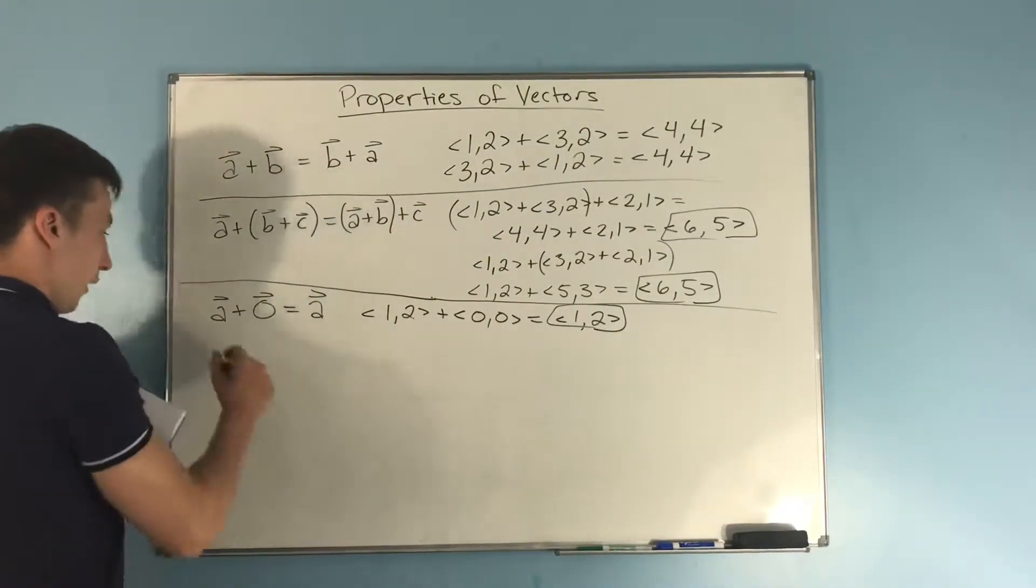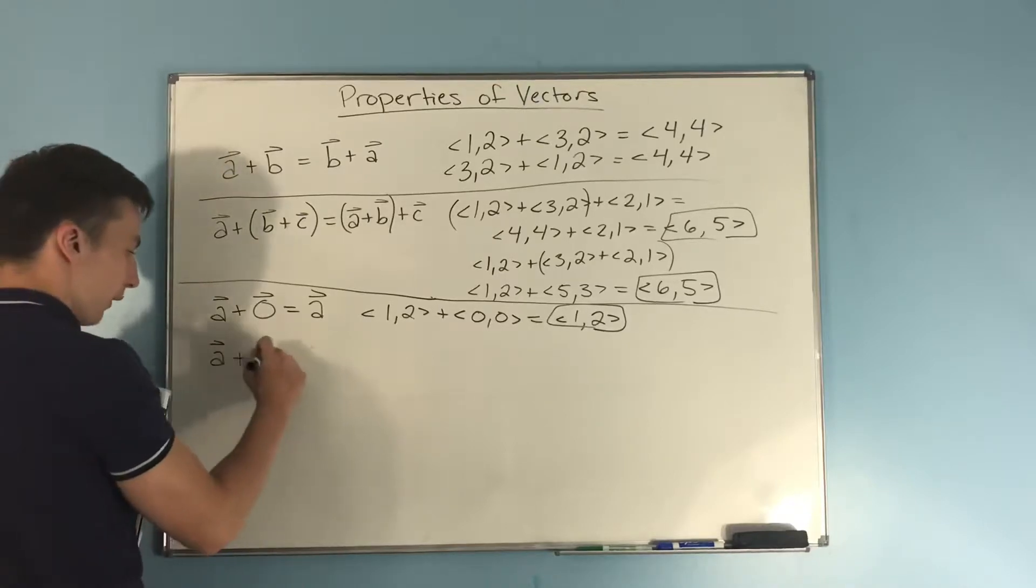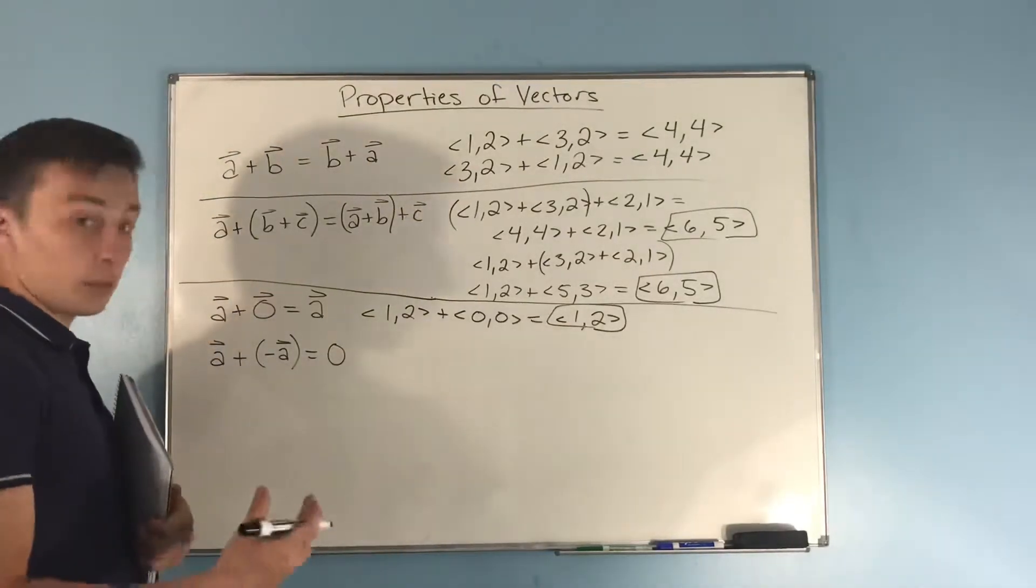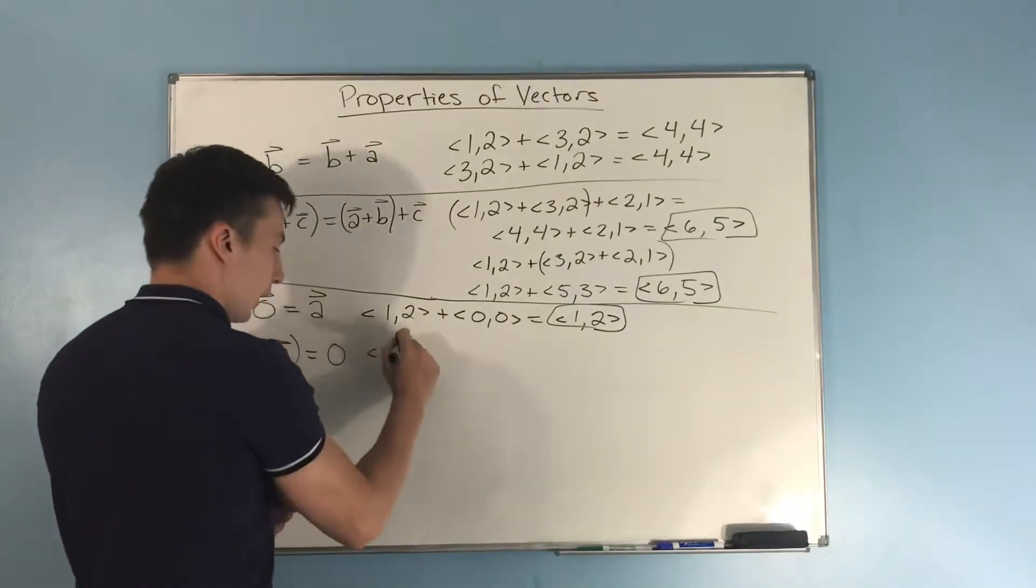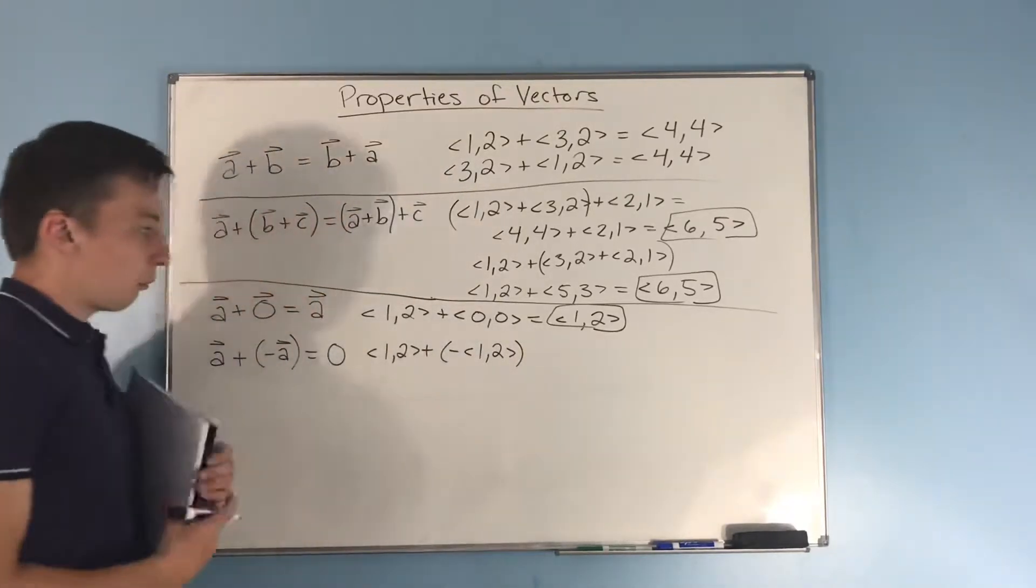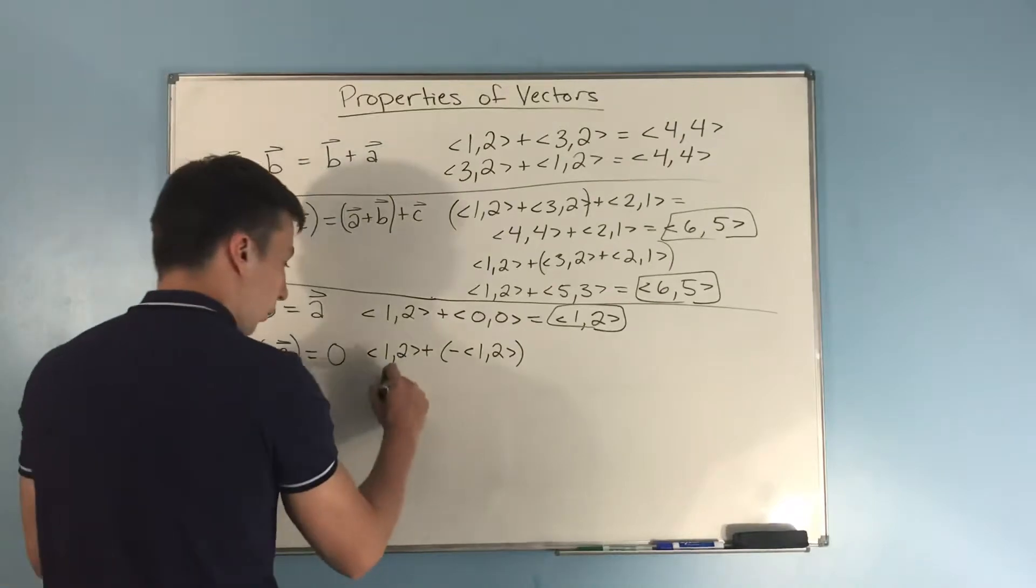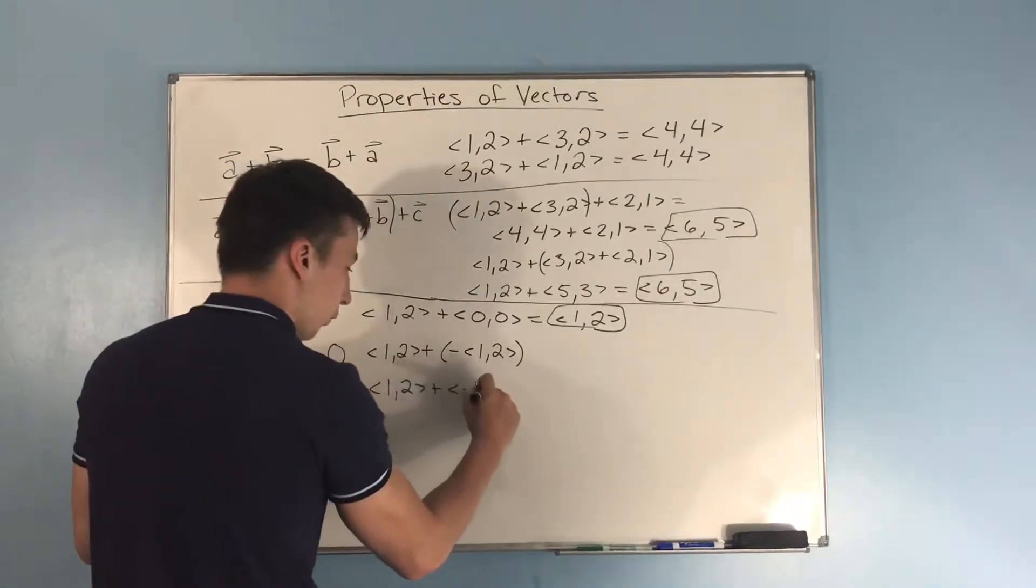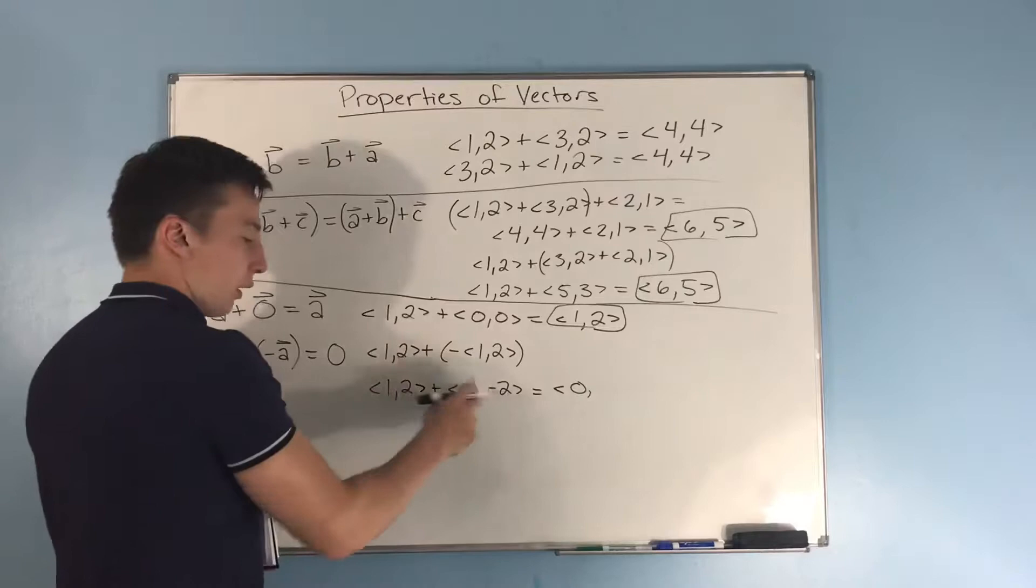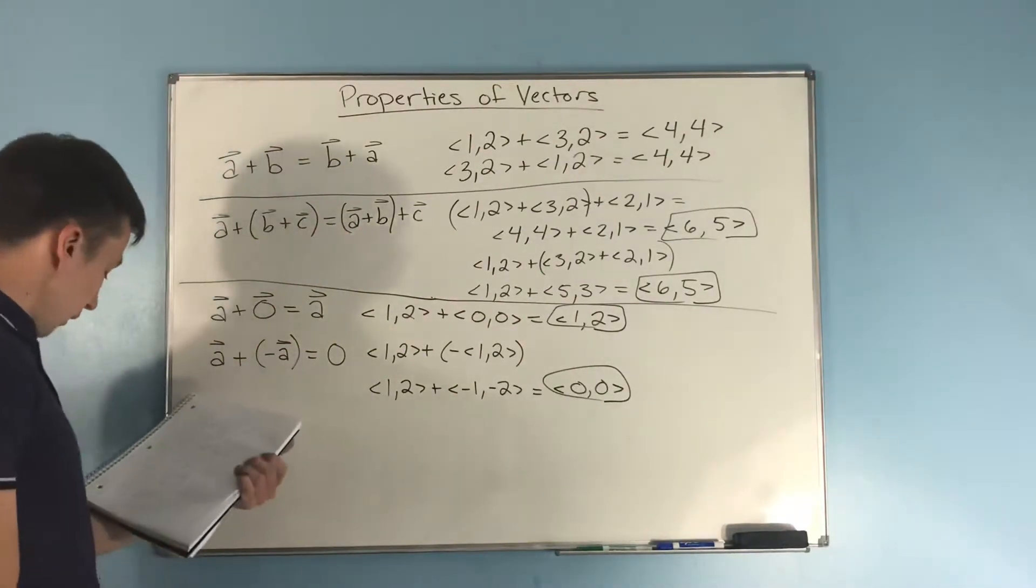Next, we have that A plus the vector negative A equals 0. Why does that equal 0? Well, here, let's show you. 1,2 plus a negative 1,2. Well, this is basically just a scalar multiplication. We're multiplying by a negative 1. So, really, this is just a 1,2 plus a negative 1, negative 2. 1 plus negative 1 is 0, and 2 minus 2 is 0. So you get 0.